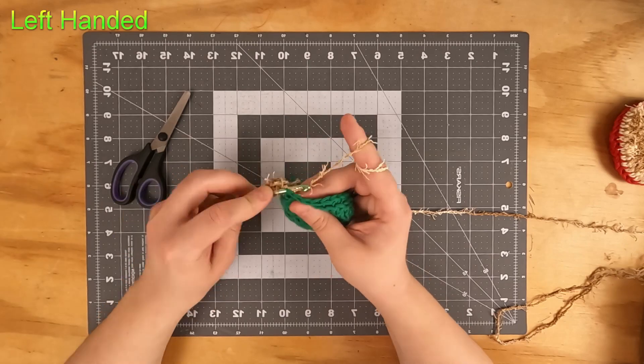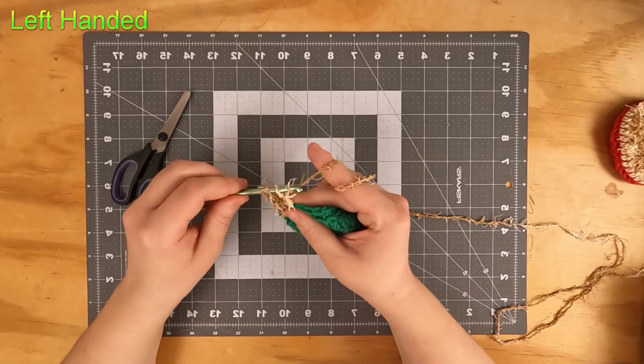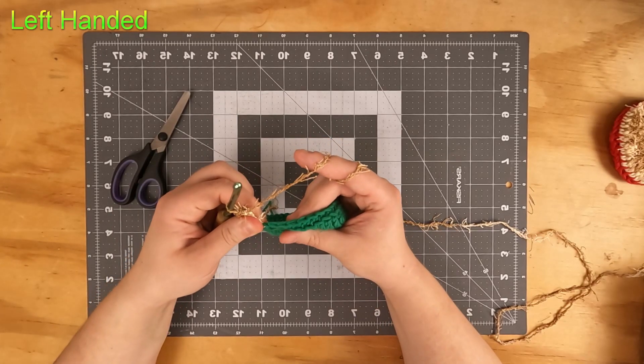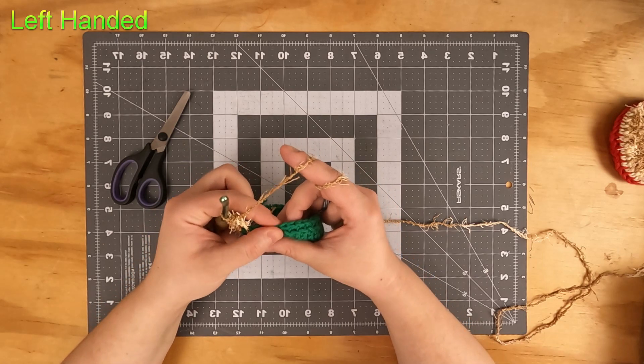So we have one and then a decrease for the second stitch, and then we'll be doing another double crochet and then another decrease all the way around.